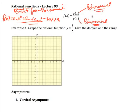An important consideration is that the denominator polynomial q(x) cannot be equal to zero, because if it were, we'd be dividing by zero, which is undefined.